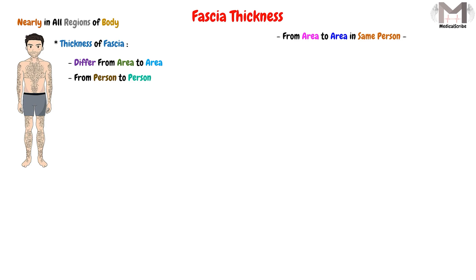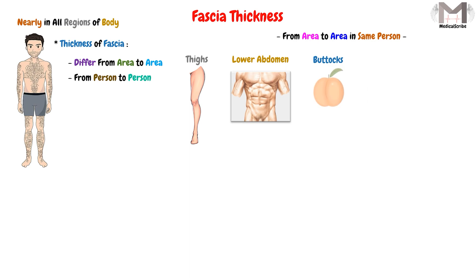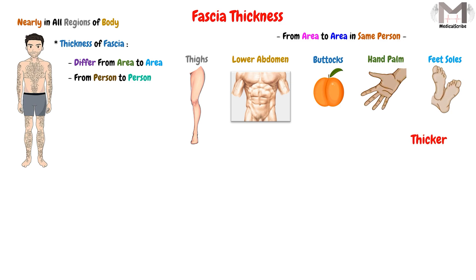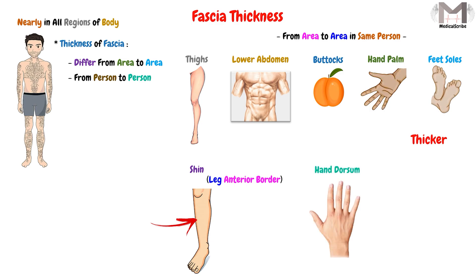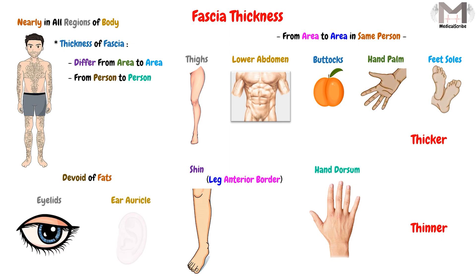For example, in the thighs, lower abdomen, buttocks, palm of the hand, and soles of the feet, the superficial fascia will be thicker than in the shin — the anterior border of the leg — and the dorsum of the hand, where it will be thinner. There are also some structures where the superficial fascia is devoid of fats entirely, such as the eyelids and the ear auricle.